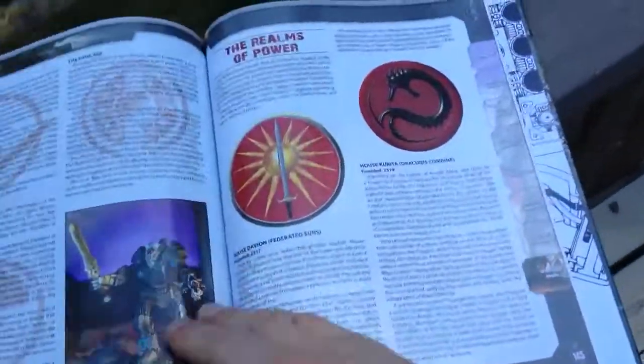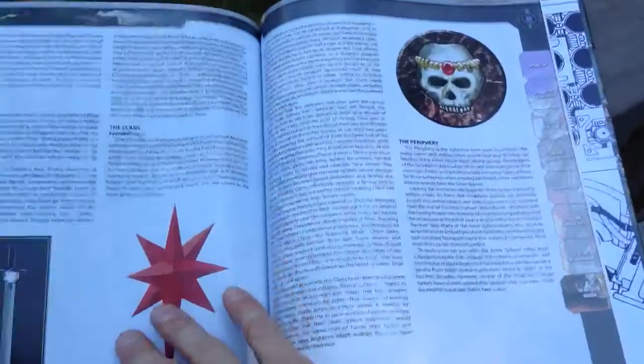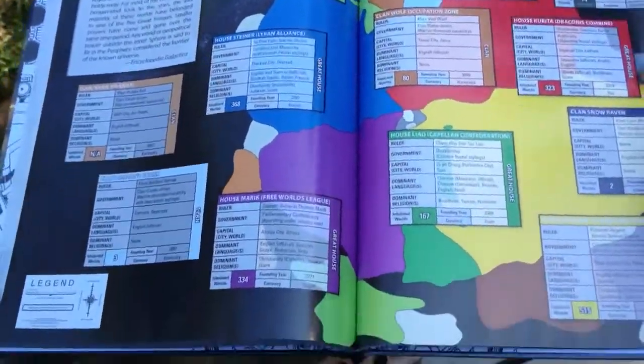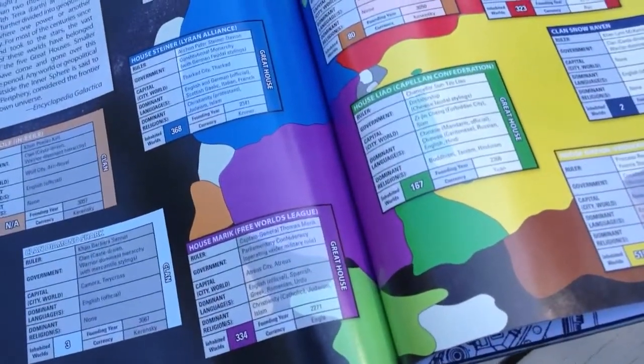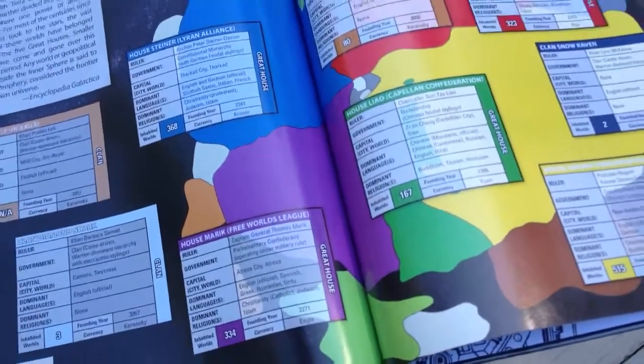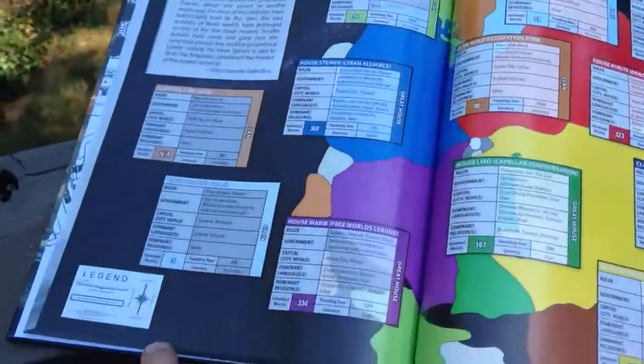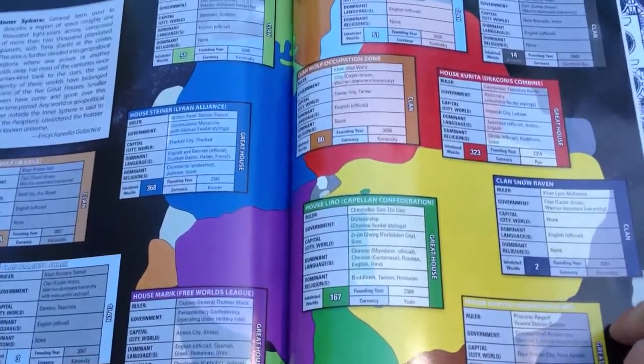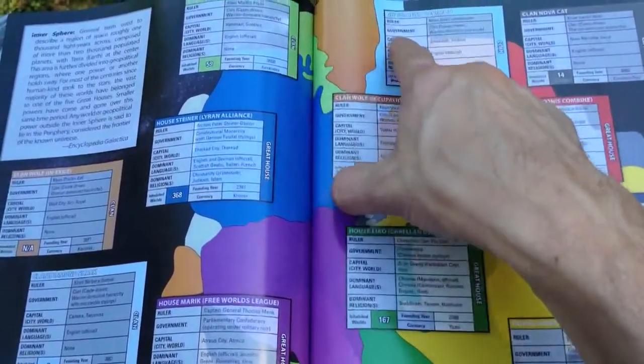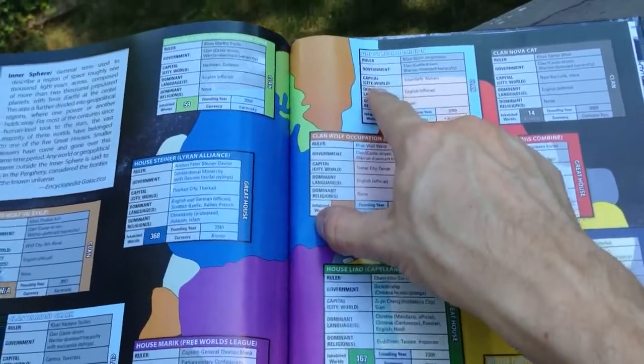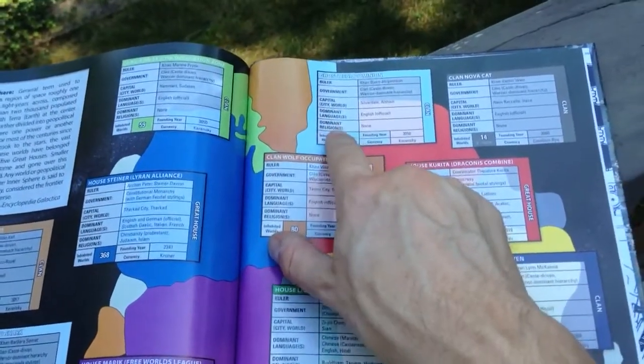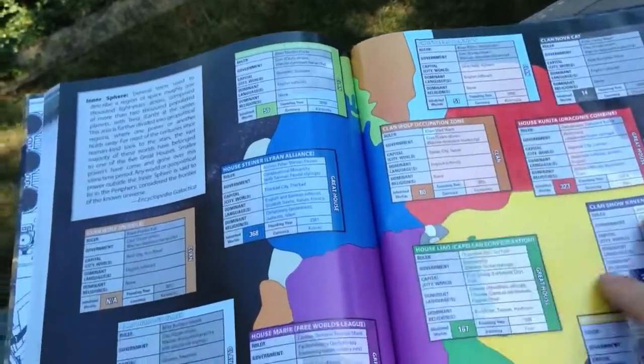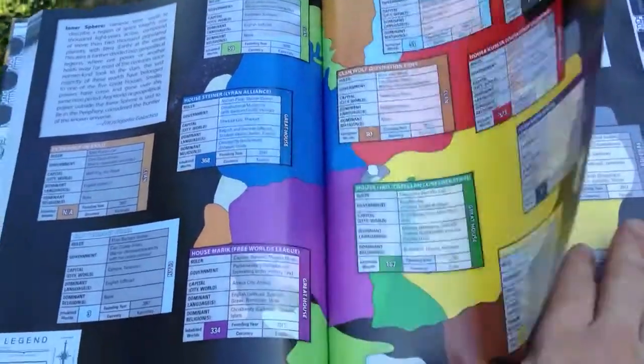The factions and the clans. Kind of the history of the universe. All the different houses. And this tells you at the time of... It says 3067 is when this map was done. They do all that with their maps here. They kind of give the date in the universe. So, I'll tell you, Ghost Bear Dominion. Who the ruler is. The government. The capital. The dominant language. Dominant religion. How many worlds there are. When it was founded. And the currency they use. So, that's cool.